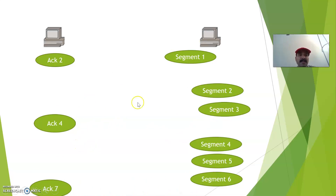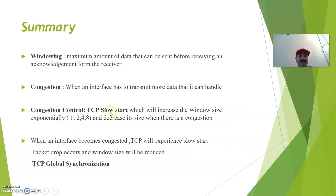What happens if there is congestion? If the sender is not able to receive the acknowledgement, that means there is a congestion, and automatically the window size will be decreased. This is what we call congestion control. There are several mechanisms to control congestion. One mechanism is TCP slow start. TCP slow start will increase the window size exponentially — first to 1, then to 2, then to 4, then to 8 — until it receives a successful acknowledgement. When there is congestion, automatically the window size will be decreased.